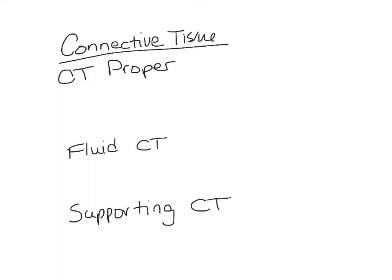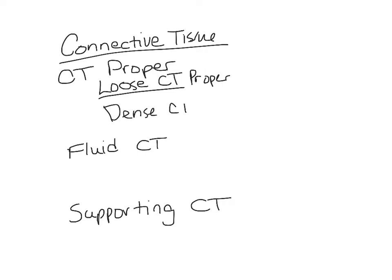We're going to look at the subdivisions underneath those and then look at examples. Under connective tissue proper, we have loose connective tissue and dense connective tissue proper. Under loose connective tissue, one example we need to know is adipose.